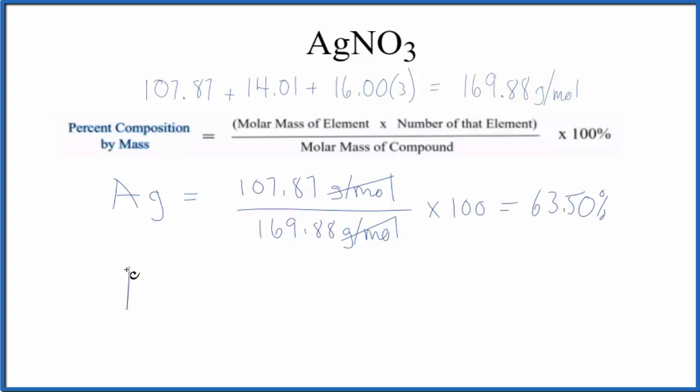Let's do the nitrogen. Nitrogen is 14.01 grams per mole. I won't write the units since they cancel out. We only have one nitrogen, so the number of element, that's one. Divide by our molar mass for the compound. Multiply by 100. And we end up with 8.25% for the nitrogen in AgNO3.